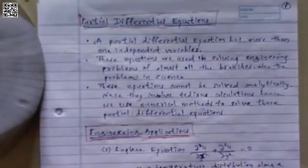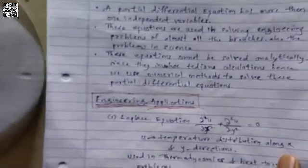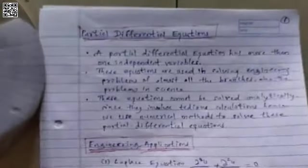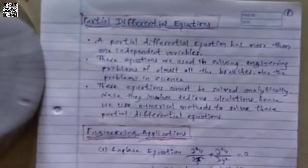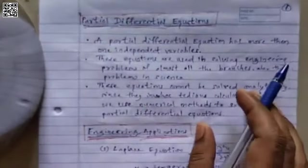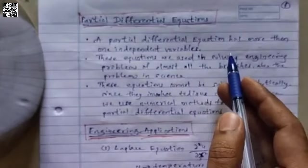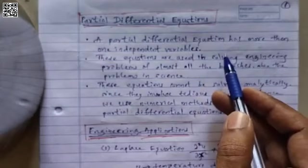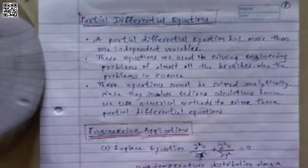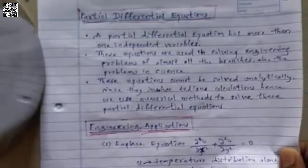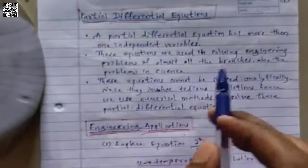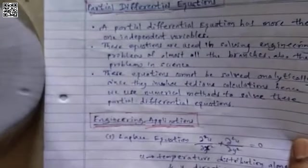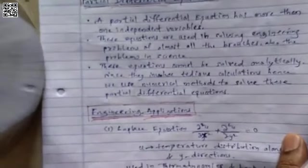Now, what are partial differential equations? Partial differential equations are differential equations where you have more than one independent variable. Such equations are used in solving many engineering problems — almost all branches of engineering and science — and they play a very important role in the engineering and science field.